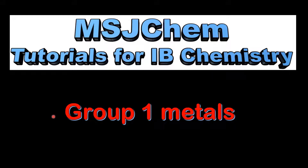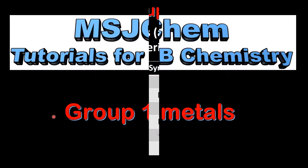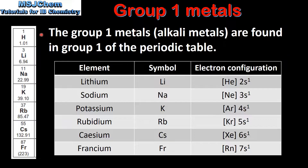This is MSJChem. In this video I'll be looking at the group 1 metals. The group 1 metals, which are also known as the alkali metals, are found in group 1 of the periodic table.